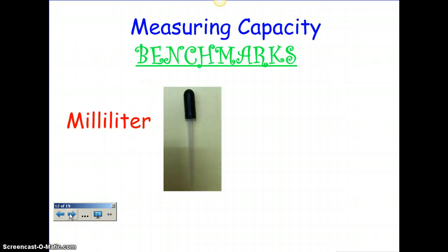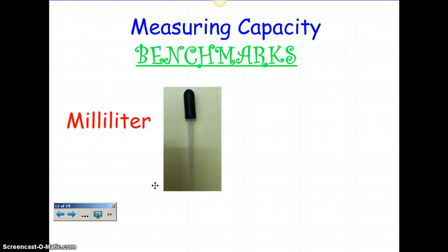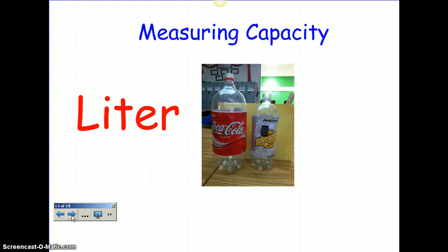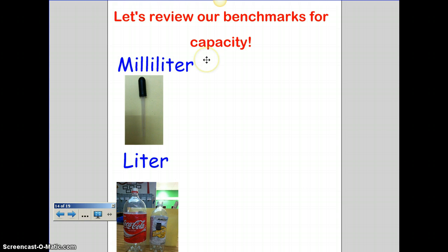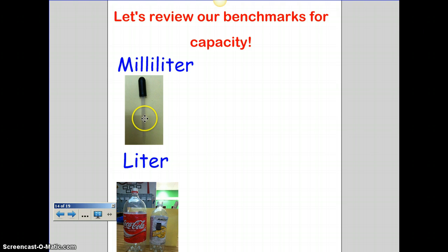Let's talk about our benchmarks for capacity. A milliliter is really tiny — any time you've had a dropper, either for eye drops or for medicine, that's a milliliter, so that's something really small. Then you have a liter, and if you've ever seen one of those soda bottles, that would be a liter. One liter is 1,000 milliliters, so it's going to take 1,000 drops of a milliliter to fill up a liter.